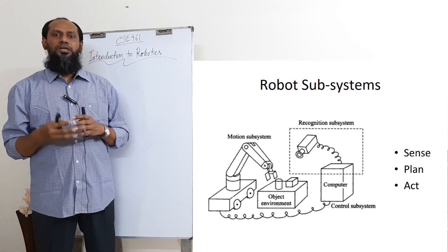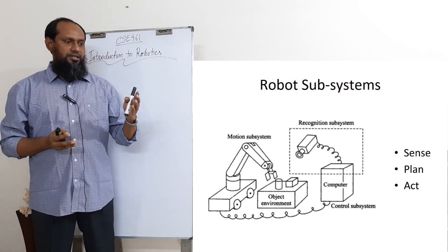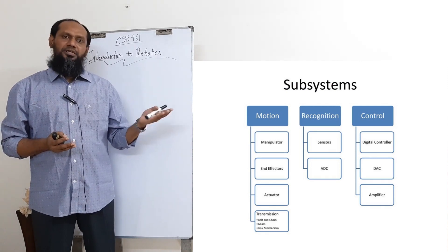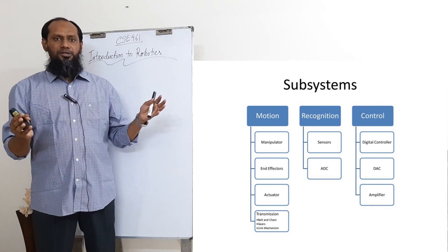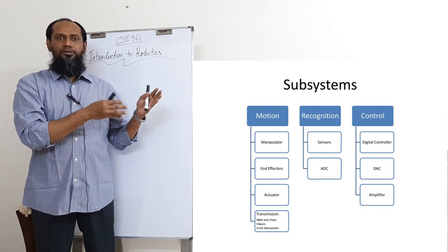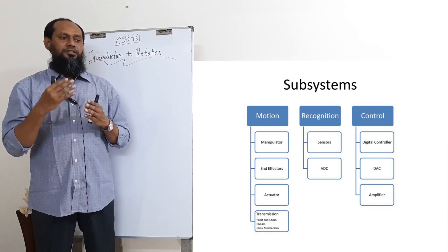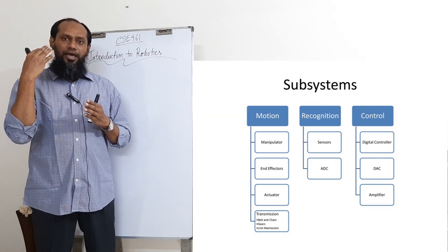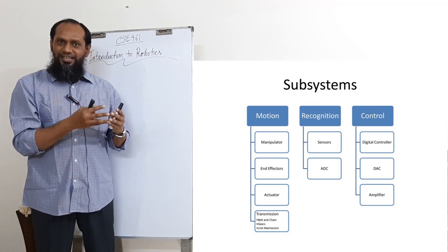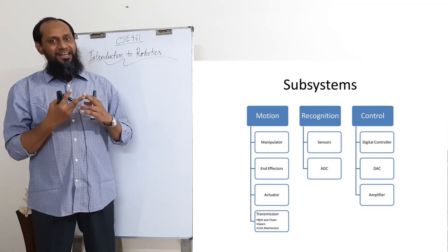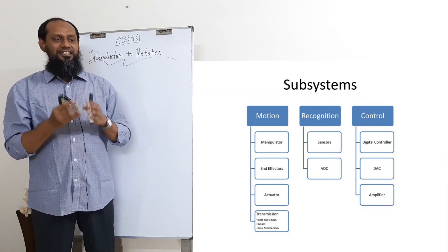We are renaming the same subsystems as Motion, Recognition, and Control. In this part we are not going to discuss them in the order Sense, Plan, Act — instead we will go: first Act, then Sense, then Plan — that means Motion, Recognition, and Control subsystems.